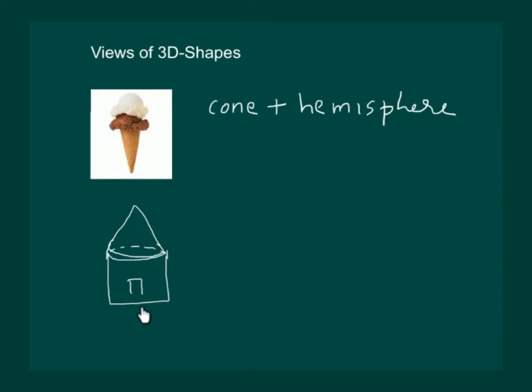It looks like a cone is surmounted by a cylinder, that is, it is a combination of a cone and a cylinder. Likewise, you can find more combinational shapes around yourself.